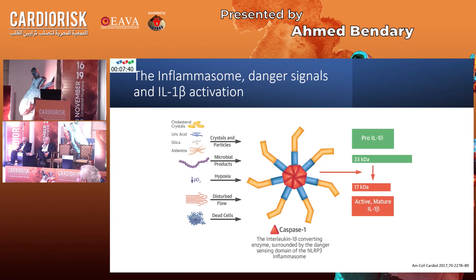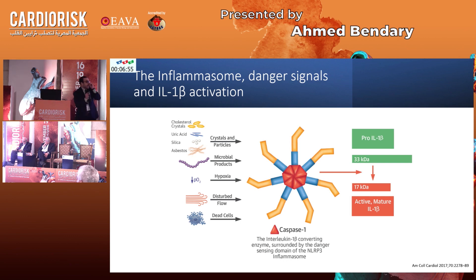I'd like to point here to a very smart molecule called the inflammasome. In simple terms, inflammasomes are just sensors — they sense many dangerous processes such as LDL crystals, microbiological products, hypoxia, and disturbed flow. Once those inflammasomes sense these dangerous signals, they convert the pro-interleukin-1-beta, which is inactive, to its active form of 17 kilodaltons to produce the cascade of inflammation. The caspase enzyme, which is responsible for this conversion, is largely dependent on this inflammasome — like the sensor in your car: if it is corrupted, your car will stop.